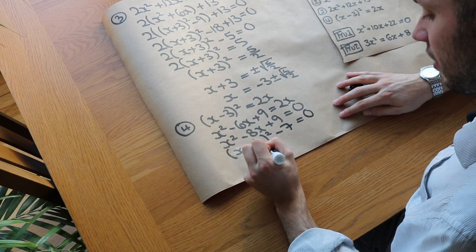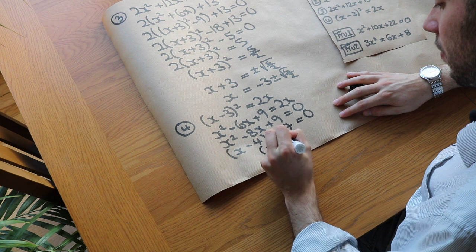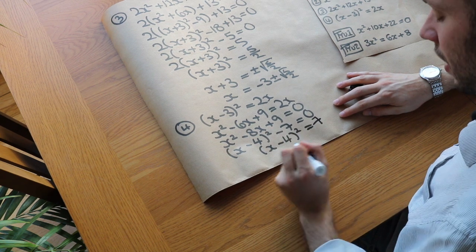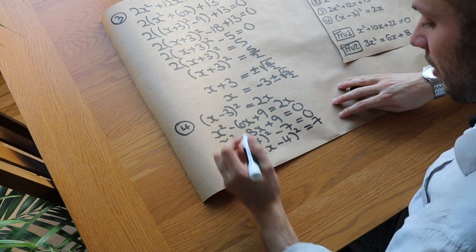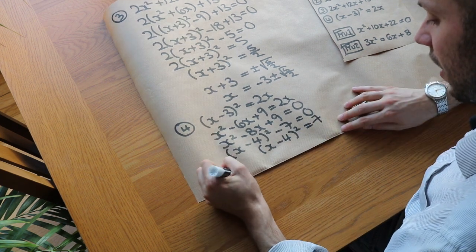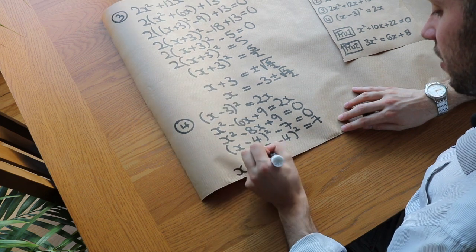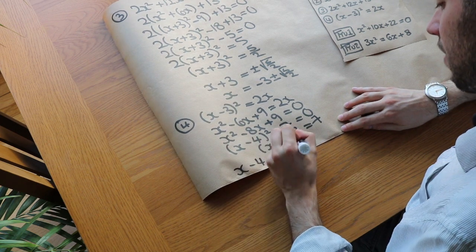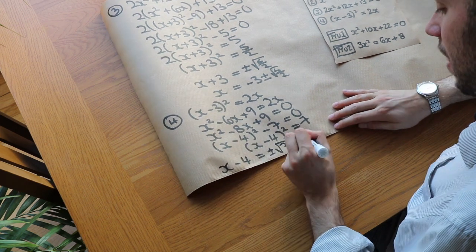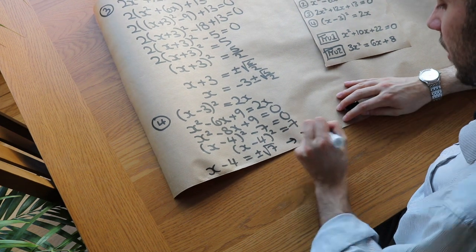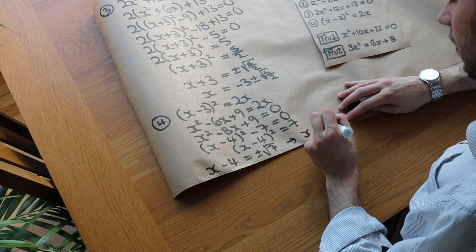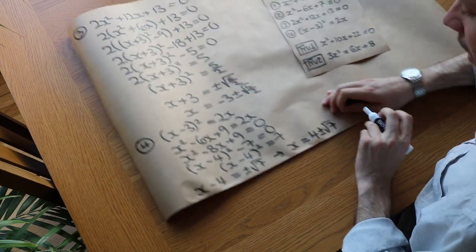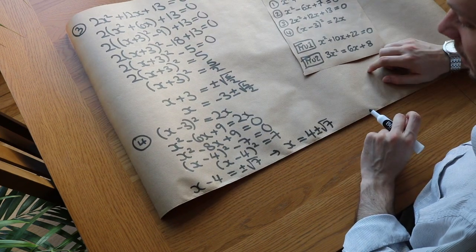We add 7 to both sides, giving x minus 4 squared equals 7. Then we square root both sides: x minus 4 equals plus or minus root 7. Adding 4 to both sides gives x equals 4 plus or minus root 7. That is the final answer.